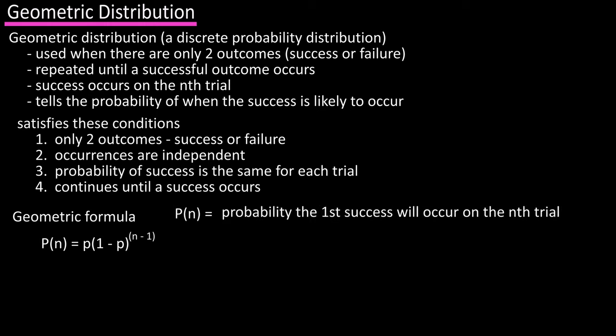Probability of n means the probability that the first success will occur on the nth trial. For instance, the probability of getting the first five will occur on the third roll of a die.